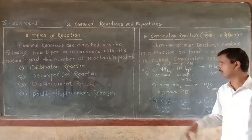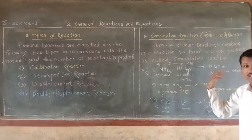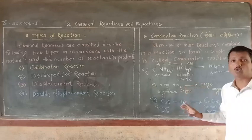Now another example is here: 2Mg plus O2 gives us 2MgO. When magnesium reacts with oxygen, then we get magnesium oxide as a single product, then it is also a combination reaction.